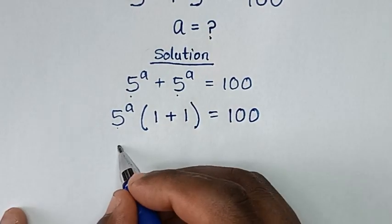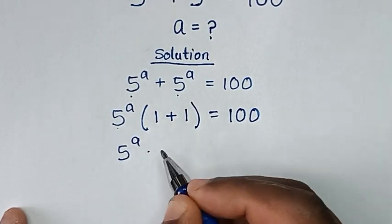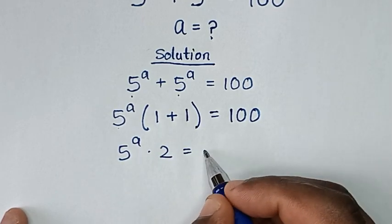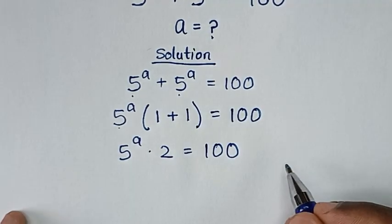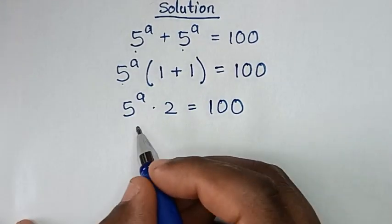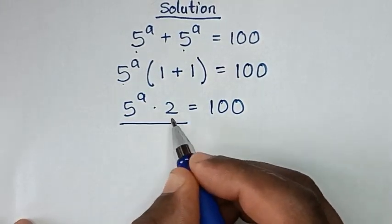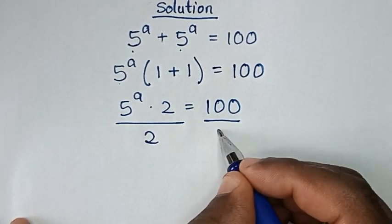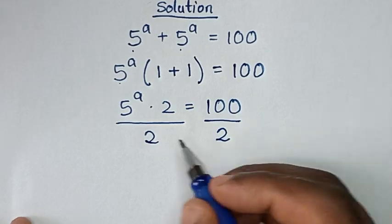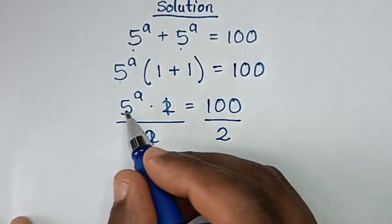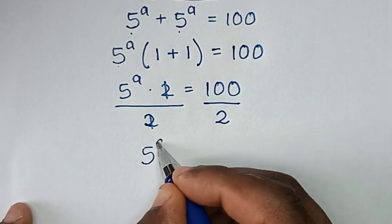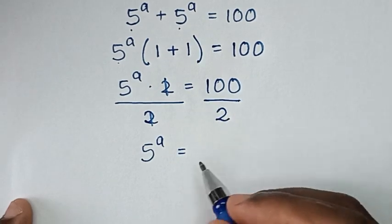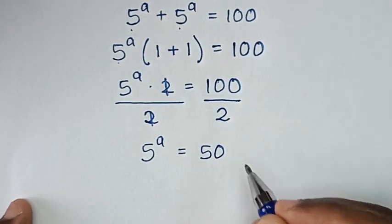Then it will be 5 power of a times 1 plus 1, which is 2, is equal to 100. Then we divide by 2 on both sides, so this and this will cancel. Then it will be 5 power of a is equal to 100 divided by 2, which is 50.